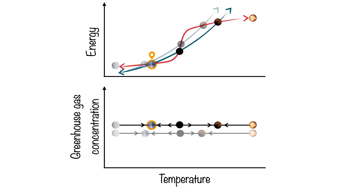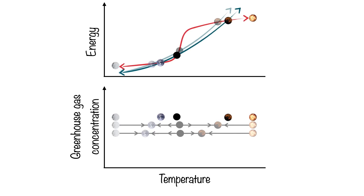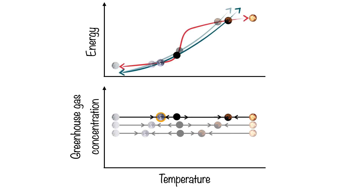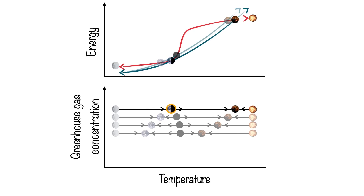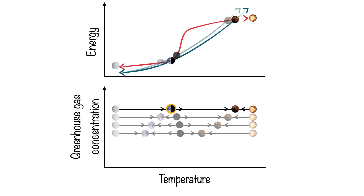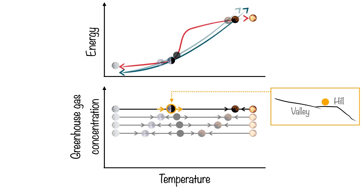If the aliens continue to increase greenhouse gas concentration, less energy will be emitted, so the blue curve will move down, the intersections will change, and the Earth-like planet will move to the right, increasing its temperature even more. And if they continue to do this right up until the Earth-like state collides and overlaps with the unstable state, now their climate is half-stable — like a valley on one side and a hill on the other. If the temperature is decreased, that's fine; it will come back. But if the temperature is increased, this planet's climate will run away to the hothouse. And this is the key, because this is a tipping point.